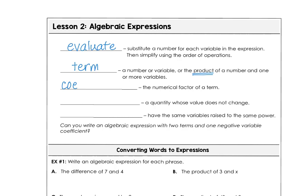A coefficient is the numerical factor of a term, and the quantity whose value doesn't change, that would be a constant term. Usually we call the constant the term without a variable. And then we have like terms when we have the same variable raised to the same power.